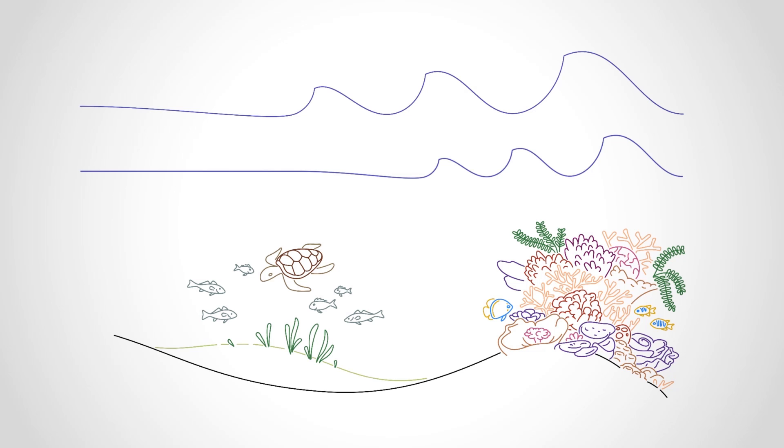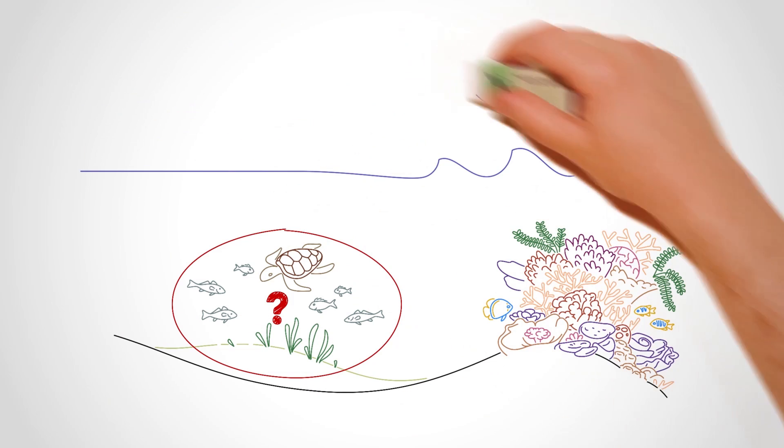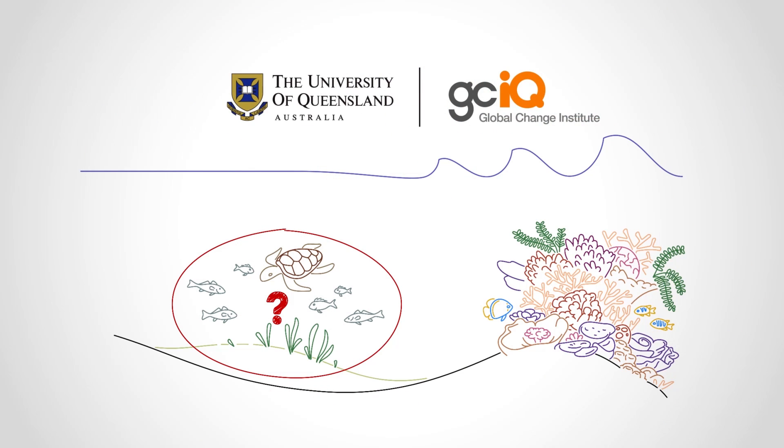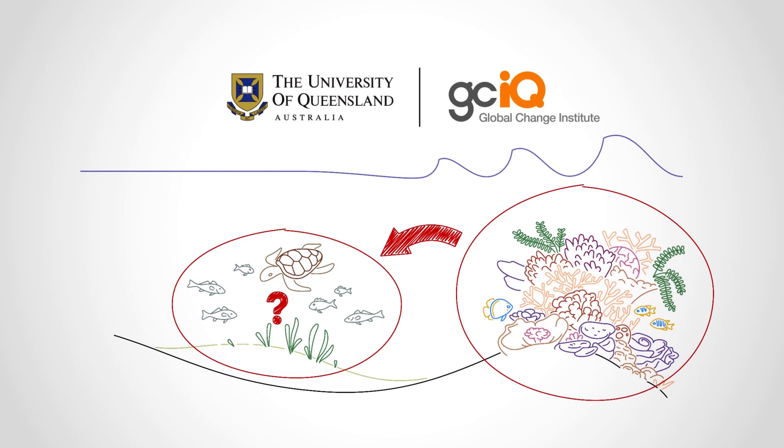But what is the effect of these changes on other ecosystems, like seagrass? At the Global Change Institute at the University of Queensland, we've conducted the first study showing how interactions amongst distinct ecosystems affect their response to climate change.